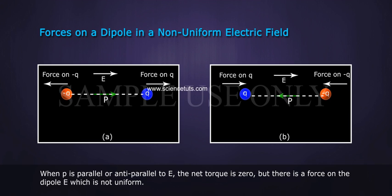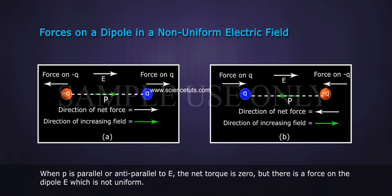When P is parallel or antiparallel to E, the net torque is zero. But there is a force on the dipole when E is not uniform.